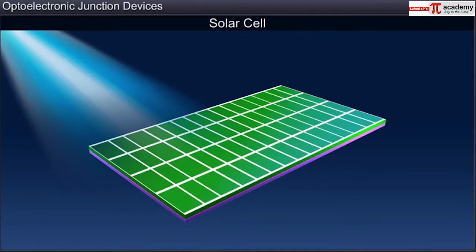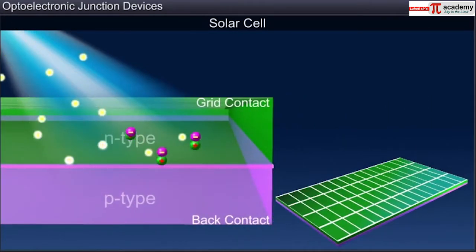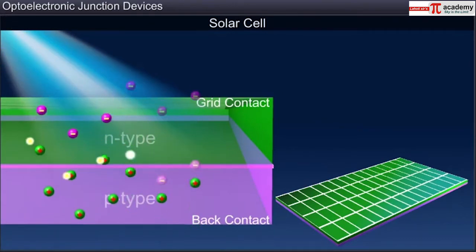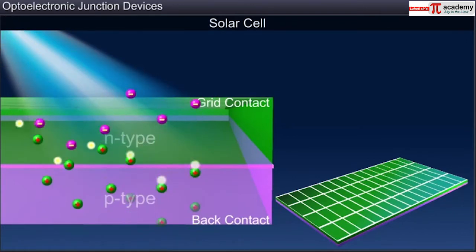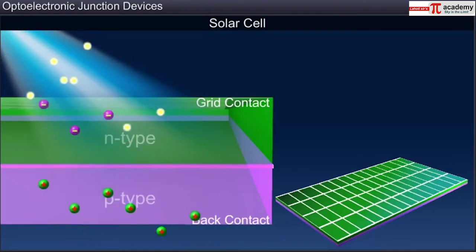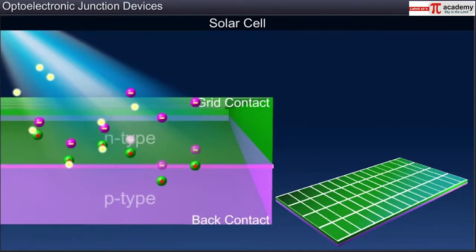A solar cell works when light is incident on it from the top over the N-side of the device. A solar cell works on the same principle as that of a photodiode, where incident light generates electron-hole pairs in the depletion region of the PN junction. As in a photodiode, the holes are pushed towards the P-side and electrons are pushed towards the N-side due to the electric field in the depletion region of the solar cell.